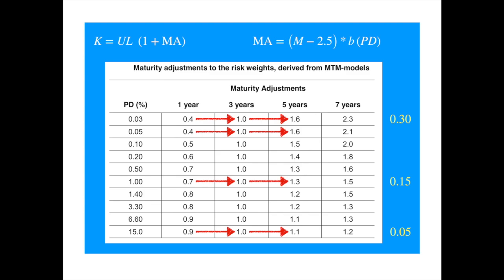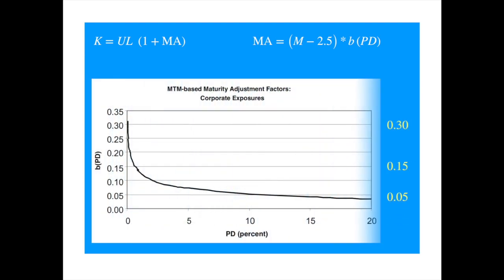Now, we reproduce the Basel plot of B as a function of the probability of default. It is a smooth version of the data we saw in the table. Now, the Basel committee determined that the following non-linear relationship provides a good approximation to the data.